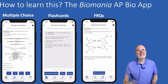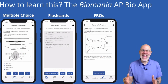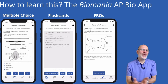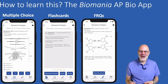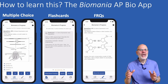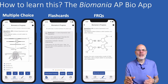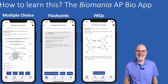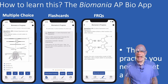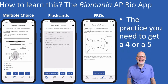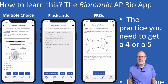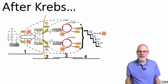I've got an app called Biomania. It has multiple choice questions, flashcards, and FRQs. You can download it from Google Play or the App Store for $6.99. It's the practice you need to get a 4 or a 5. Get Biomania and your subscription to learn-biology.com.